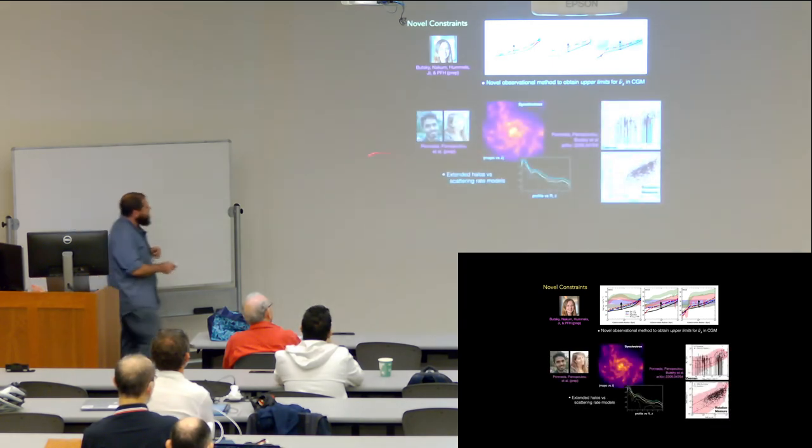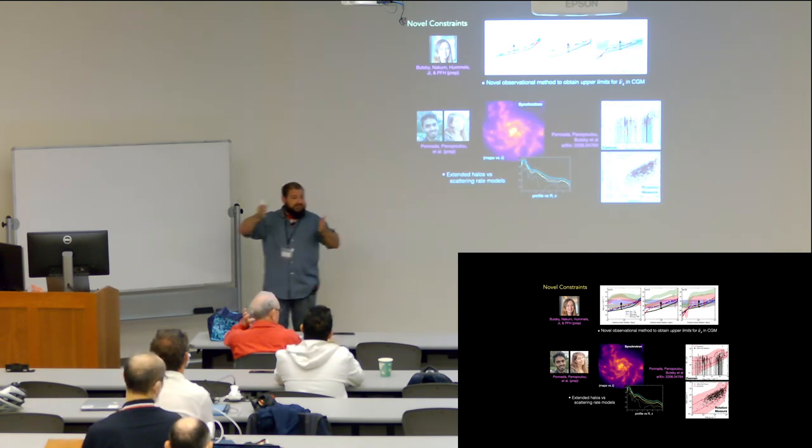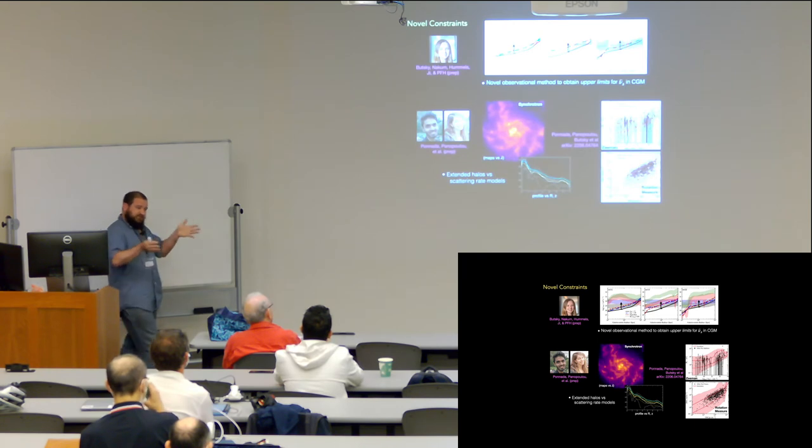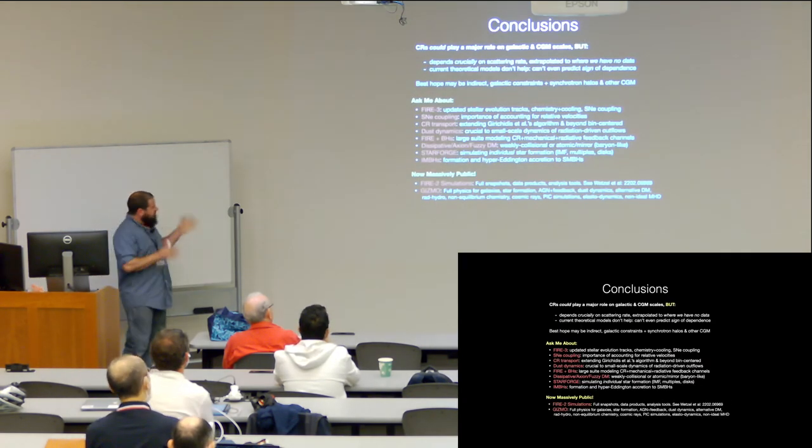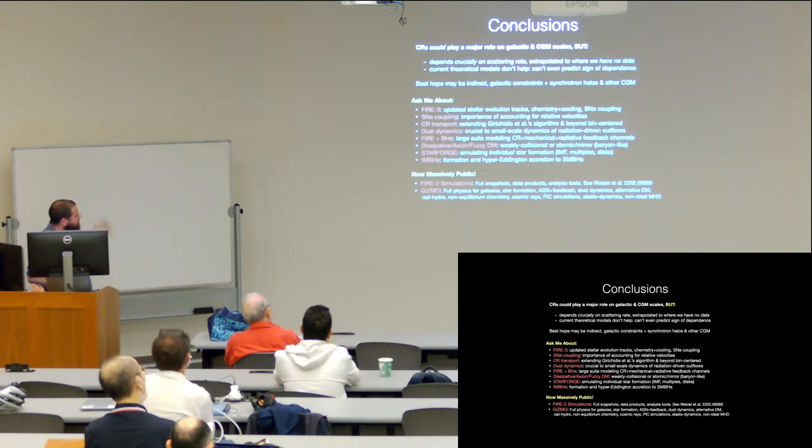We're also trying to think of new observations. Irina's finishing up a paper on new observational constraints, new ways to set upper limits on the scattering rate, or equivalently lower limits on the diffusivity in the CGM. Another student, Sam Panada, with a post-doc Gina Panopoulou, have been making extended synchrotron maps around galaxies. Their idea is to look at things like synchrotron scale heights as a function of wavelength around nearby galaxies and see if we can get information out of that. And that's where we're still hoping these full-spectrum models will be very valuable, because it lets us predict details of the synchrotron properties and try and get new constraints on this. So cosmic rays could be crucial, but it depends crucially on the scattering rate, and we don't have any data where the scattering rate matters. So we really need to think about how we're approaching this and explore new approaches and new constraints. And I think our best hope might be these indirect constraints.